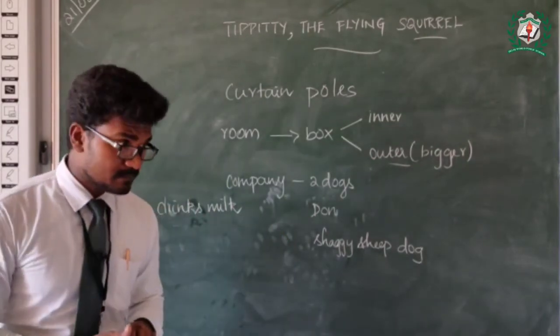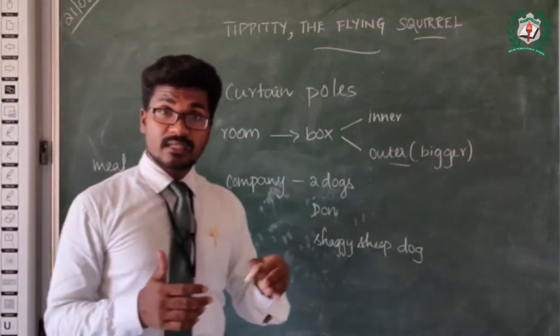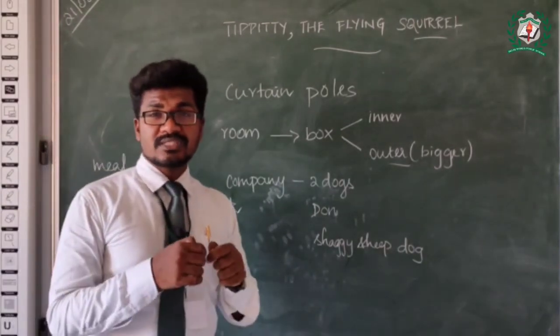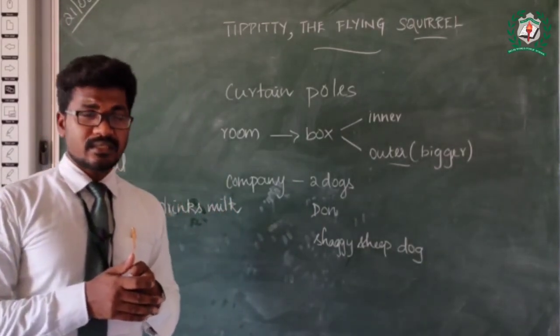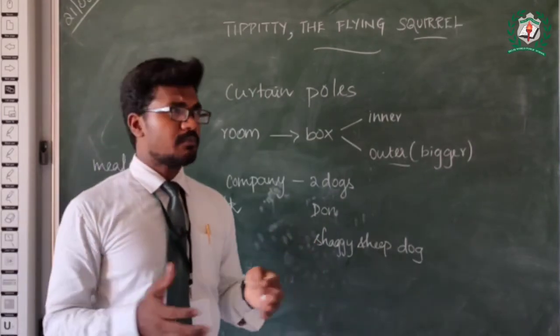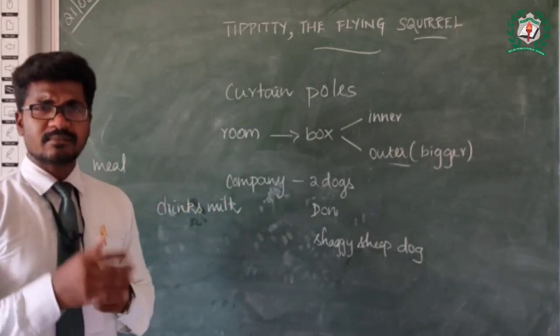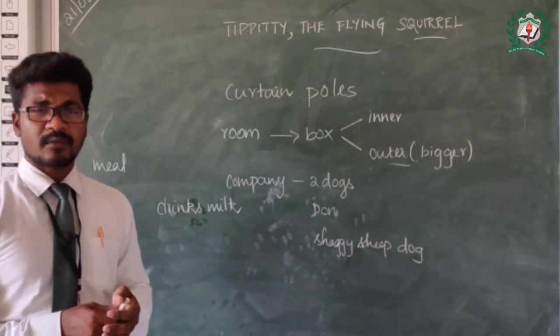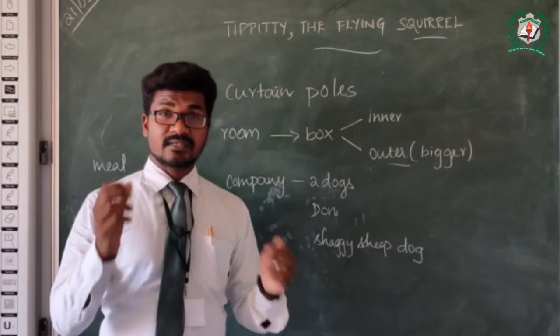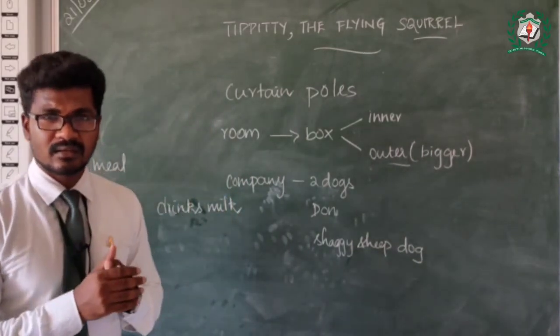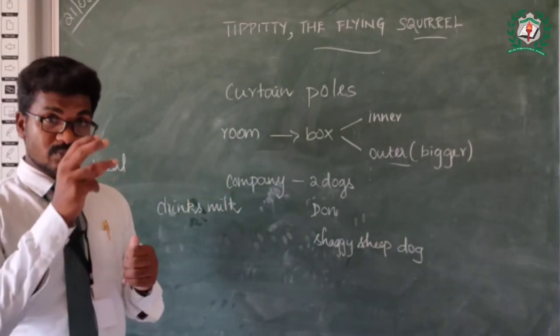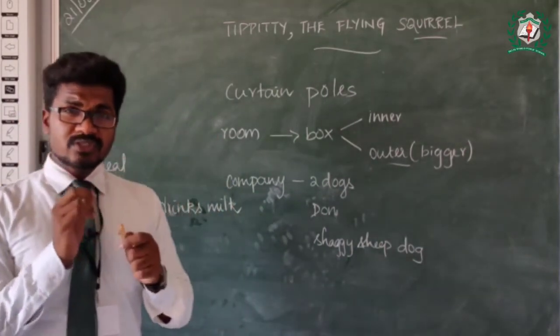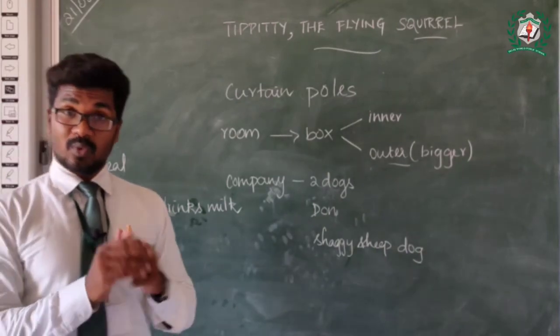And as usual during the dining time, it always used to be chained up because it used to do so much nuisance. Sometimes the tail touches the custard and makes it dirty because it is a pure red color squirrel and it has a bushy tail. So the author always used to tie it up.